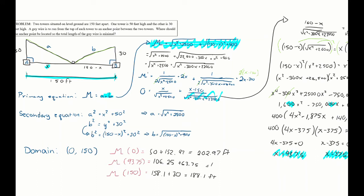At the critical number x = 93.75, plugging in gives 106.25 + 63.75 = 170 feet. Comparing the three values, the minimum is 170 feet, occurring at x = 93.75 feet. So the anchor point should be placed 93.75 feet from tower A to minimize the total guy wire length.